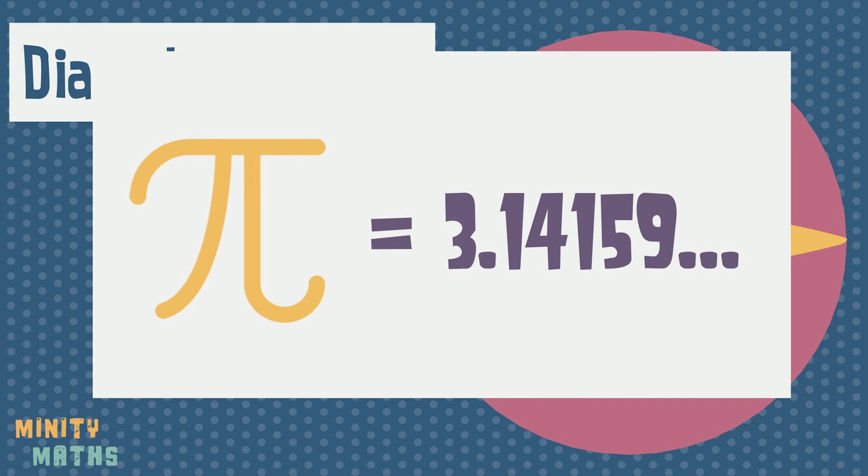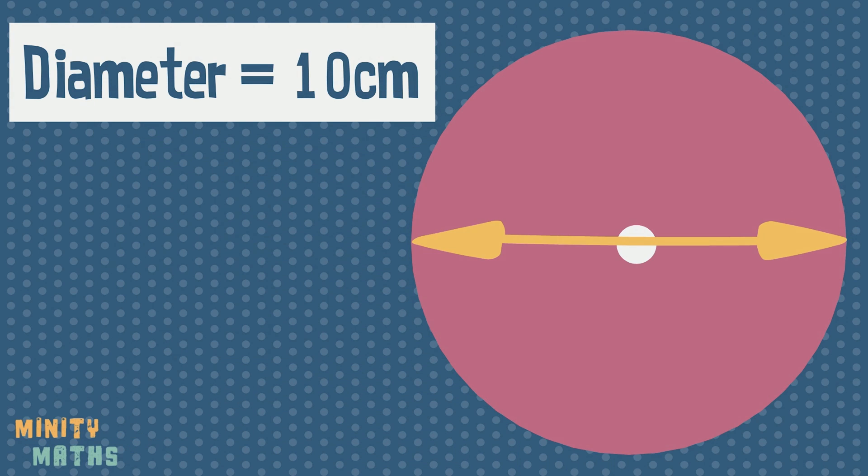So let's see how Pi relates to the circumference of a circle. If we were to take some pieces of string, each measuring the same length of the diameter, we could fit just over three of these strings around the circumference of the circle.